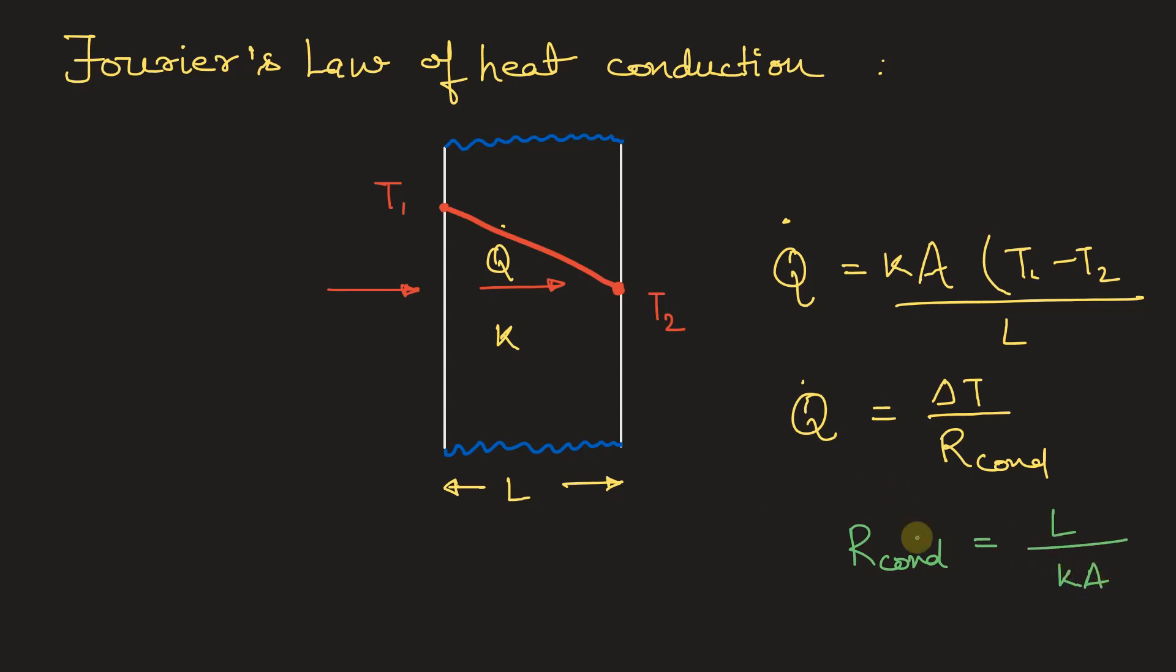If I make a resistance diagram from the analogy of Ohm's law, this is T1 temperature, this is T2, the end of the wall temperature, and the heat flowing. The heat flow can be represented like this and this is the conductive resistance.